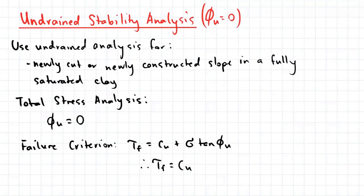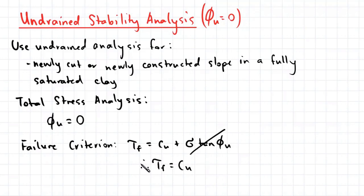Let's now look at an undrained stability analysis. We use undrained analysis for newly cut or newly constructed slopes in fully saturated clay, and we also use total stress analysis, which means phi_U equals zero. Looking at our failure criterion, tau_F equals Cu plus sigma multiplied by tan(phi_U). Since phi_U equals zero, this term cancels out, so tau_F equals the undrained cohesion Cu.